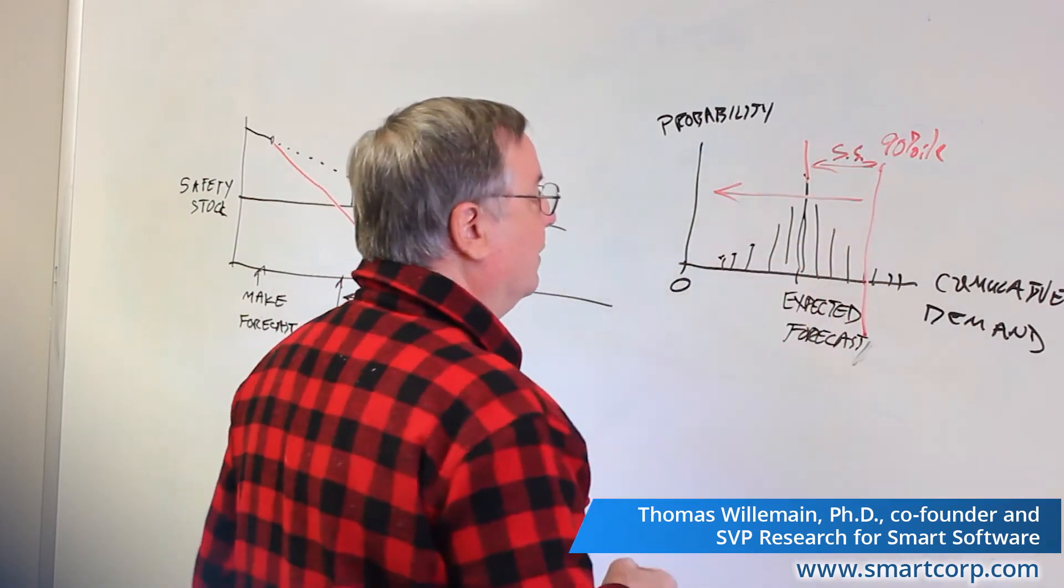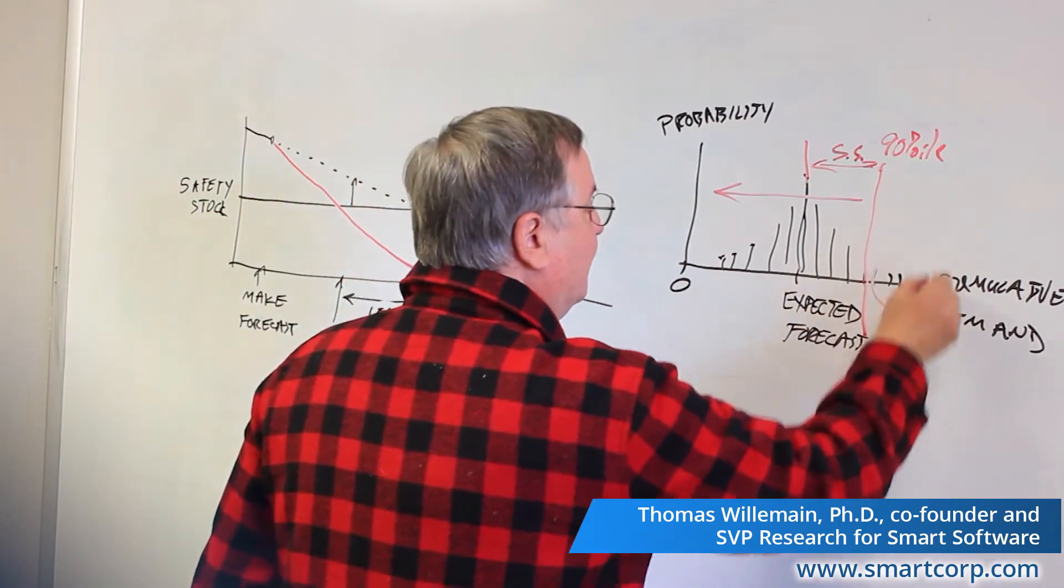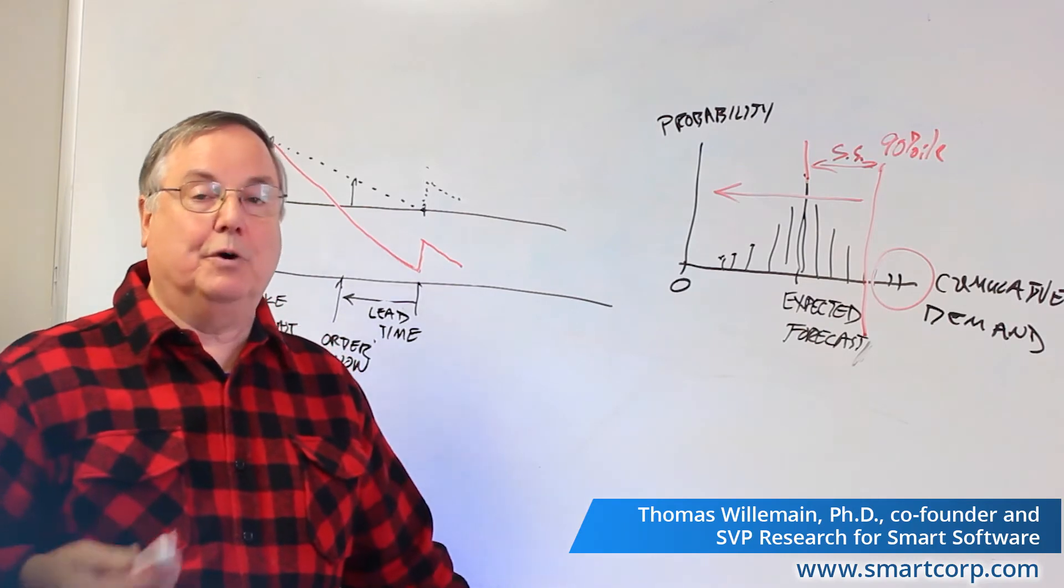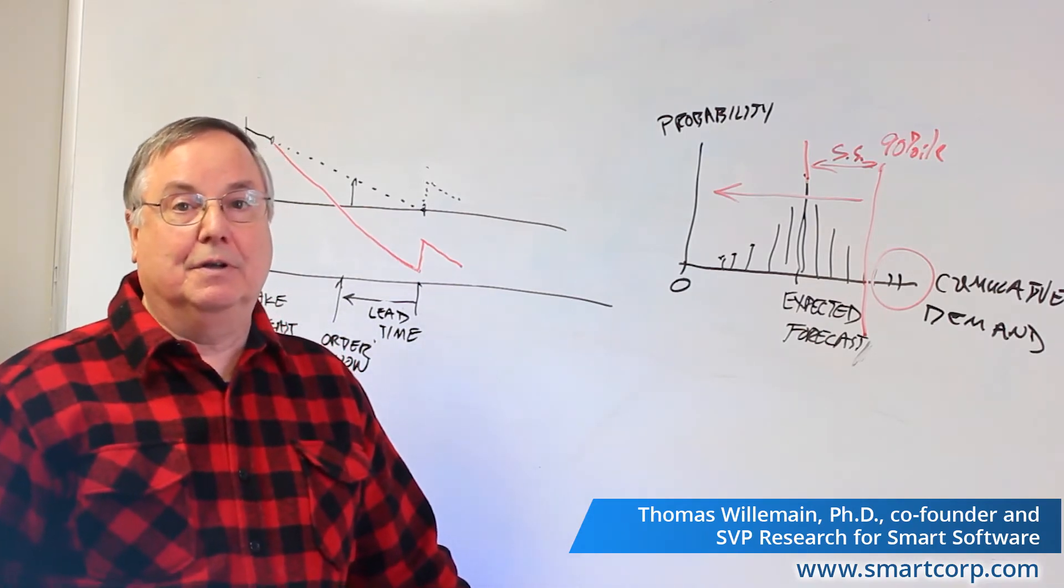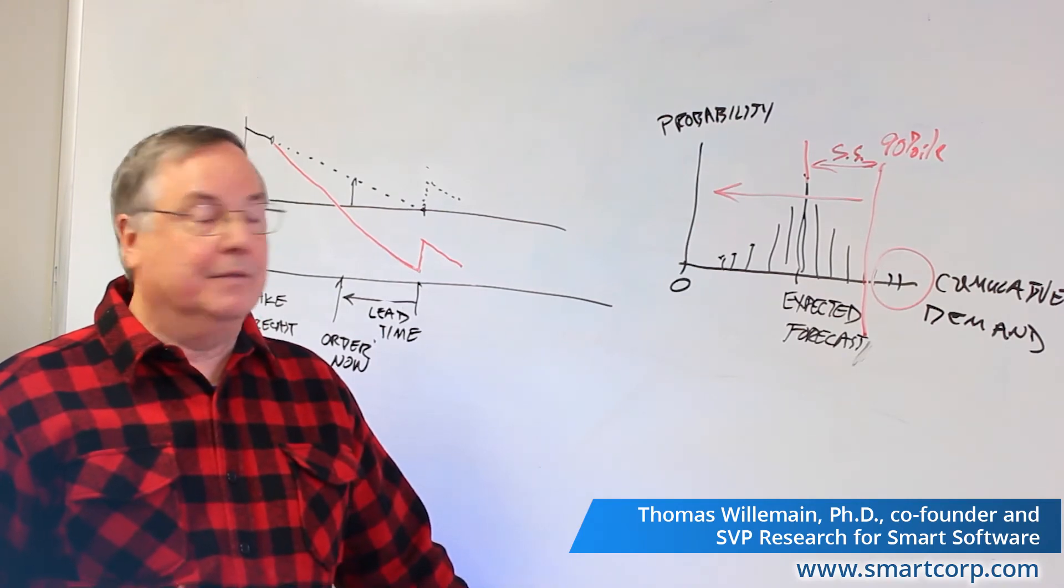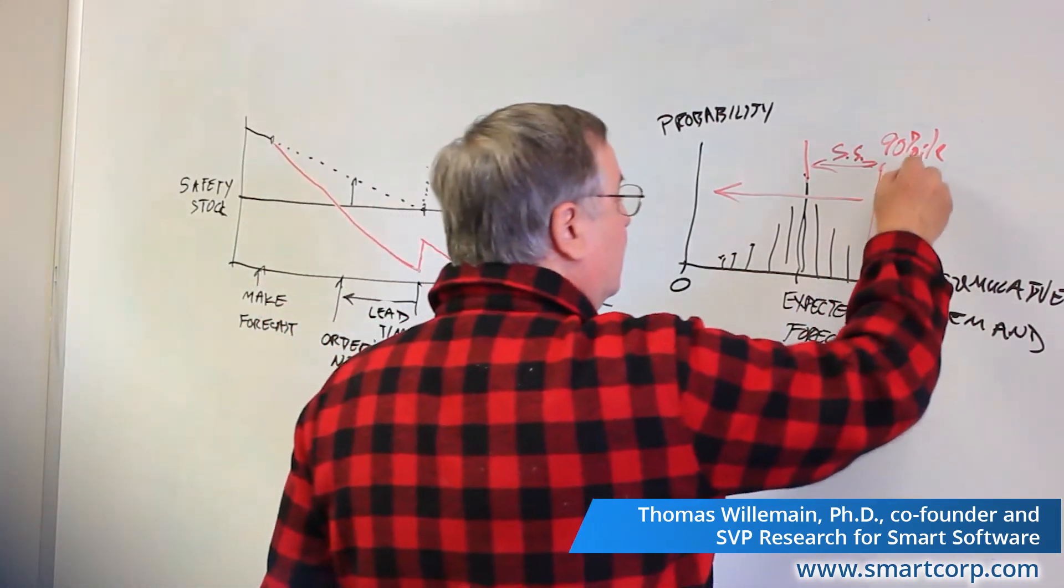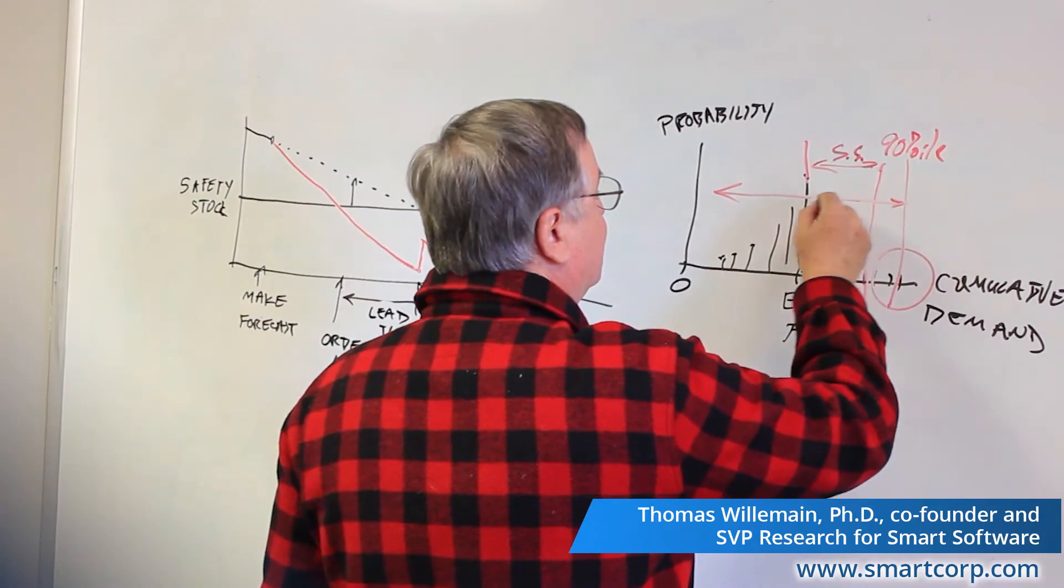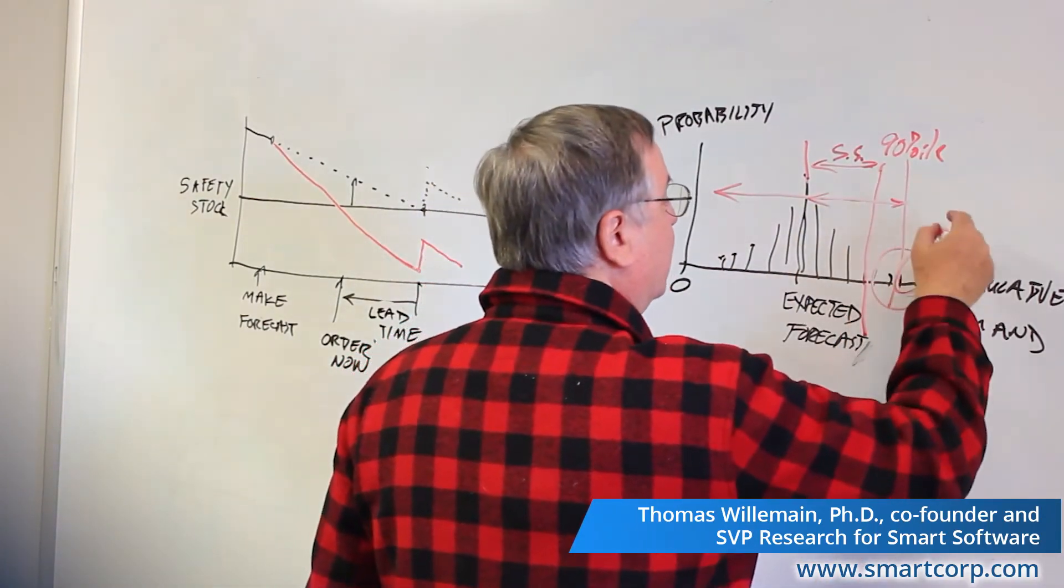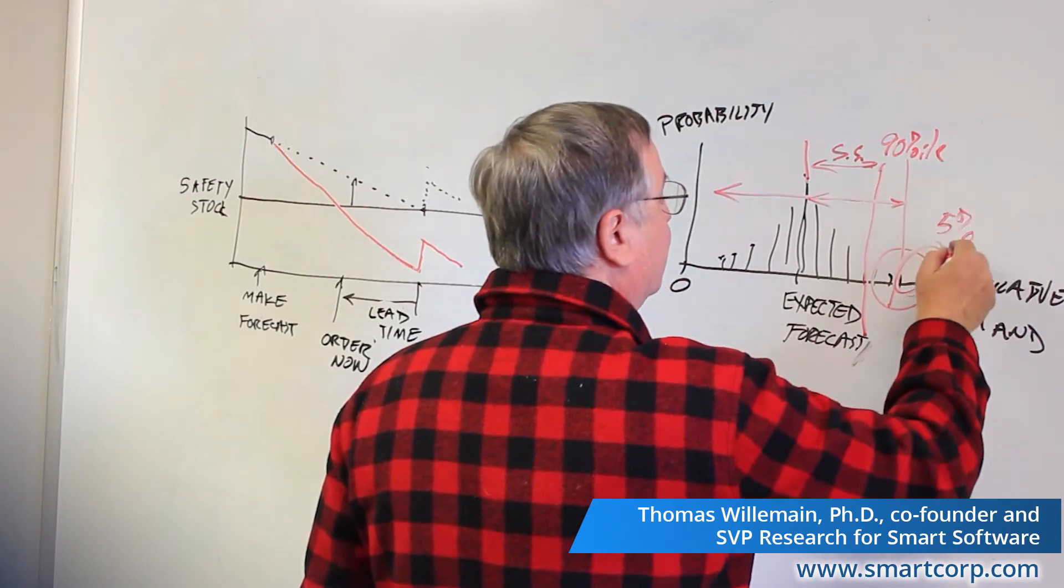So if we don't like a 10% risk of stock out, then we move this level up, so we expand the safety stock, a bigger buffer. And maybe now the remaining is just say a 5% chance of stock out here.